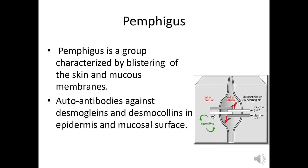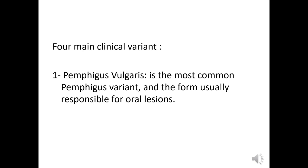In pemphigus diseases, blisters affect both skin and mucous membranes, and autoantibodies target parts of the desmosome called desmoglein-3 and desmoglein-1. Pemphigus vulgaris is the most common pemphigus variant and is usually responsible for oral lesions. Sometimes the patient comes only with oral lesions, without any skin involvement, for years.